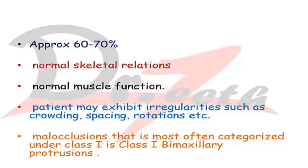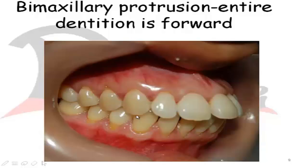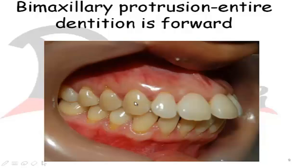One type often characterized under Class 1 is bimaxillary protrusion. In bimaxillary protrusion, the entire dentition is forwardly placed. The molar relationship will be Class 1 and the canine relationship will be Class 1, but the upper and lower teeth will be proclined. Class 1 canine relationship means the mesial incline of the upper canine occludes with the distal slope of the mandibular canine, or the incisal tip of the maxillary canine occludes in the embrasure between the lower canine and lower premolar.